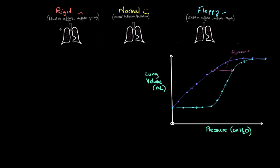Welcome back. In the last video we talked about the relationships between pressure and volume in volume control ventilation. We talked about how pressure varies as the properties of the lung change — how with rigid lungs the pressure generated by delivering a set tidal volume increases, whereas if the lungs become more floppy, the pressure generated is lower for the same volume. I said I would do a video on compliance, so that's what we're covering today, along with a pressure-volume graph.